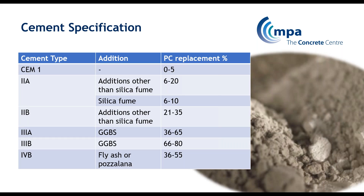There are various different types of cement. The one that most people know about is Portland Cement, otherwise known as CEM1 or Ordinary Portland Cement, OPC. That's the one that used to be the only cement available, but now CEM1 can be used in addition with other cementitious materials. The range of cementitious materials we put in are called additions, cement replacements, or secondary cementitious materials.